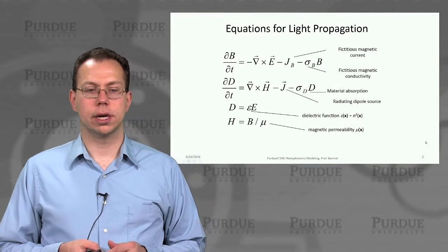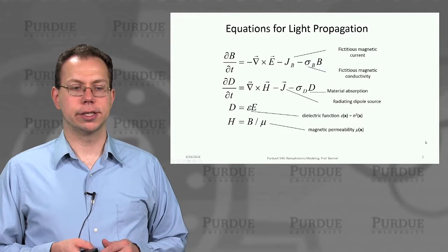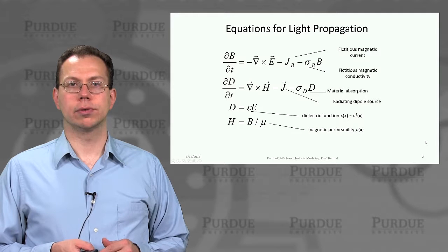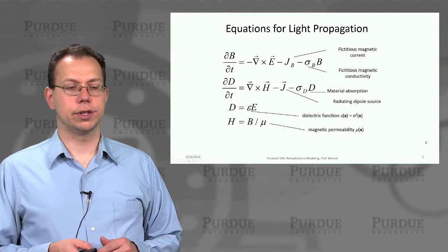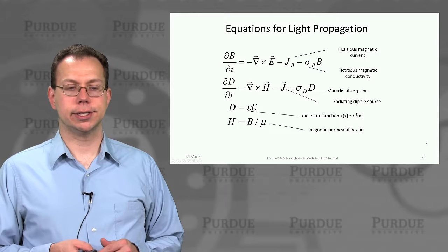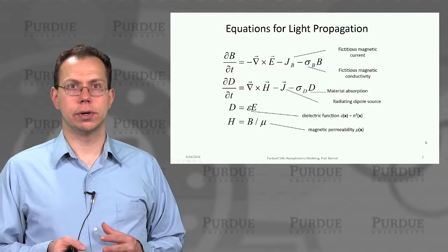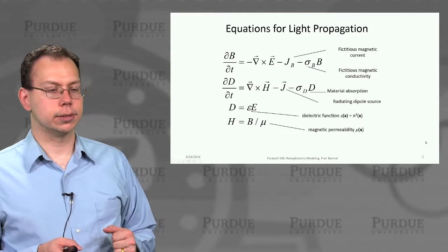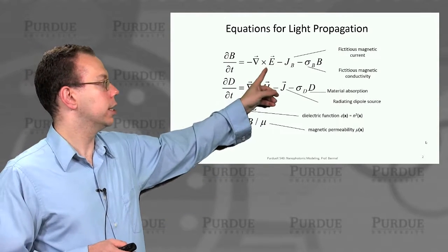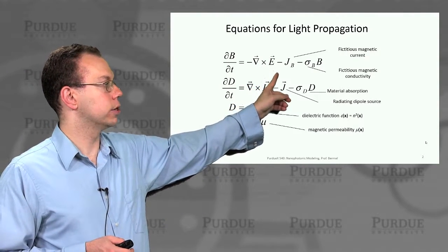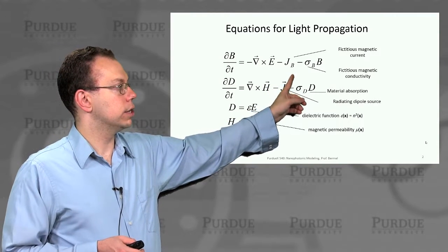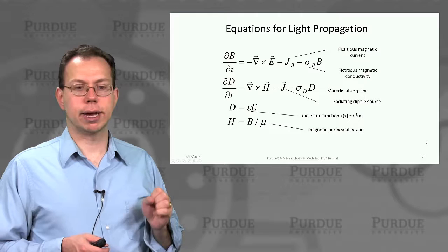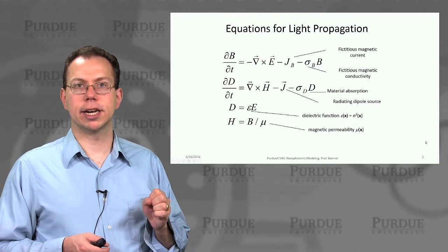And so if you look at Maxwell's equations, you notice that it has spatial derivatives as well as time derivatives. And furthermore, if you compare this to the well-known Maxwell's equations, there are a couple of changes. Of course, this is Faraday's law here, dB/dt equals minus curl E. But then you also subtract these extra two terms, which are fictitious magnetic current and fictitious magnetic conductivity.